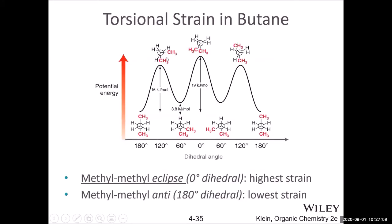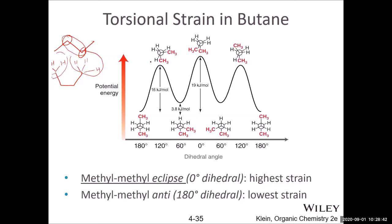With butane, it becomes more interesting. Looking along the central C2–C3 bond, each carbon has one methyl group. The energy curve looks different because when the two methyl groups are fully eclipsed, each has three hydrogens and the repulsion between the two methyl groups is the strongest. That situation — two methyl groups fully eclipsed — gives the highest energy of all.